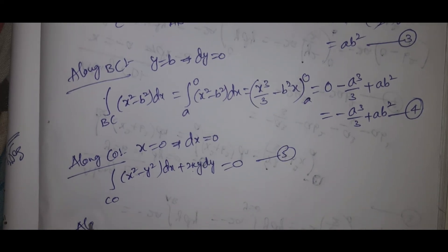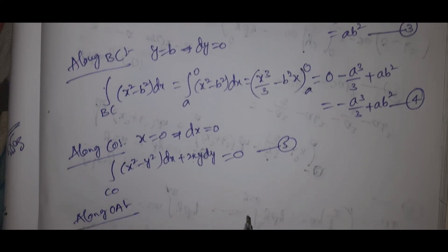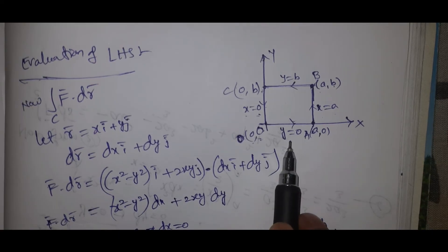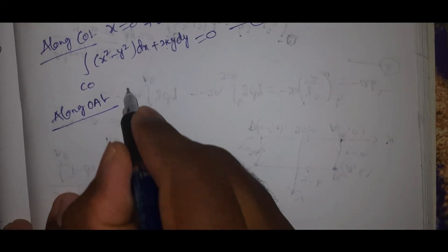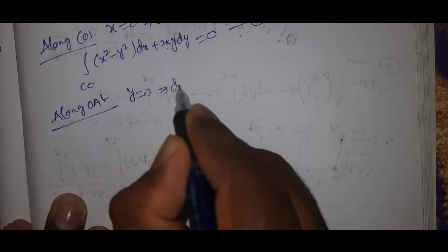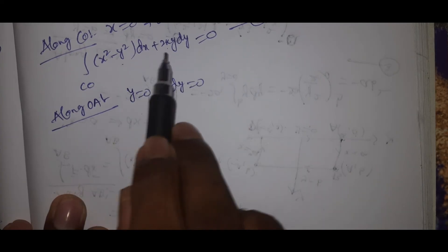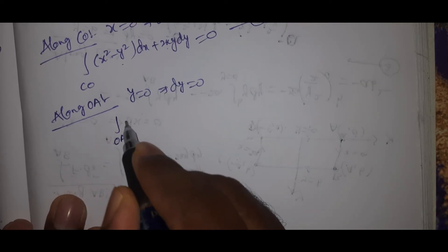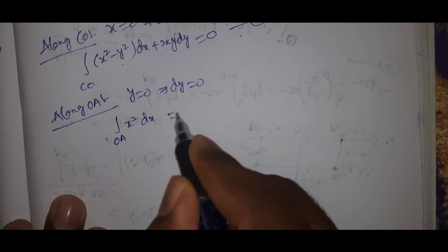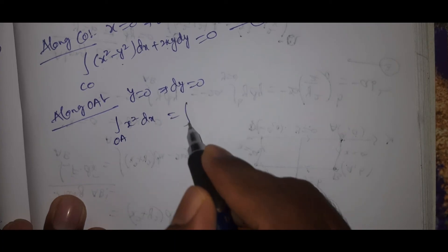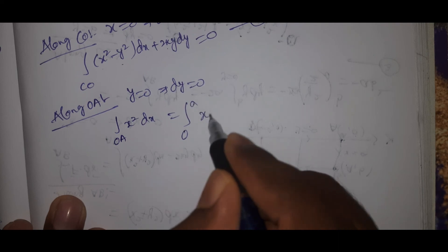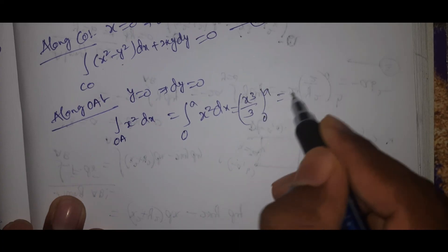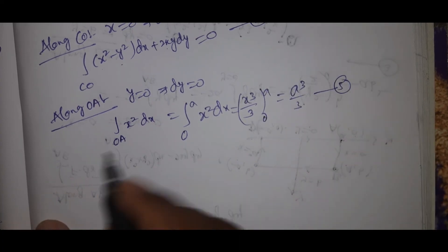Along OA: y = 0, that implies dy = 0. Integral along OA of x² dx, with limits x=0 to a. That equals [x³/3] from 0 to a = a³/3. This is equation number 5.